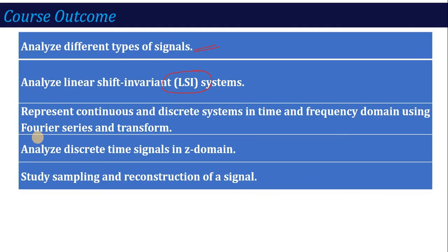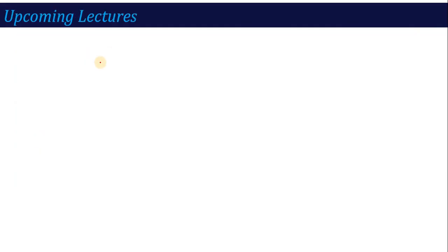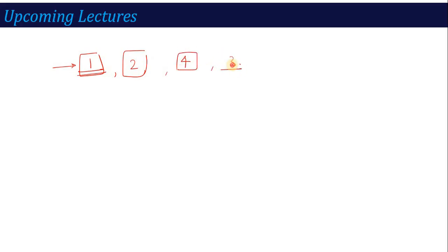These outcomes are designed by AKTU. In upcoming lectures, I will start with unit number 1. Then unit number 2, then we will go to unit number 4 — Z-transform first — and then come to unit number 3, which is the lengthy one containing Fourier and Laplace transforms, and finally cover unit number 5.